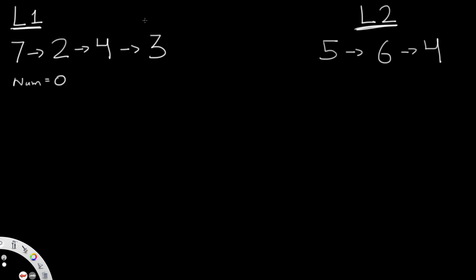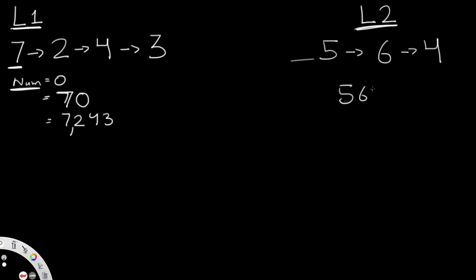Using that, we take our num and each time multiply it by 10, then add whatever value we're currently on. So zero multiplied by 10 is zero, and we add seven — so our number is seven. Then seven multiplied by 10 gives us 70, and we add two, giving us 72. By the end, you get 7,243. And for the second list, you end up getting 564.